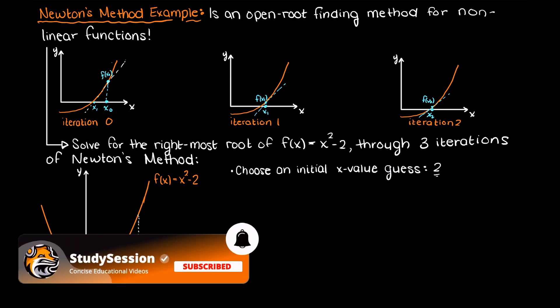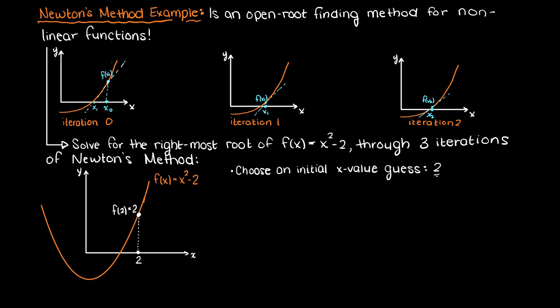So, our goal right now is to find where the tangent line of our initial x guess crosses the x-axis. As we talked about in the previous video, this is approximated by our first order Taylor series expansion. So this is found using the following equation which we derived in that previous video.